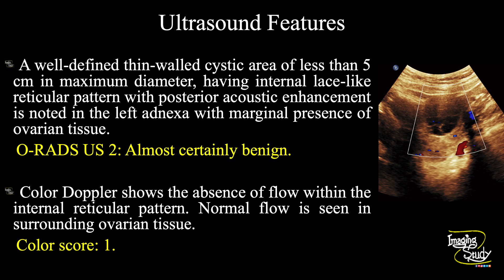As it is more than 3 cm and less than 10 cm, with the typical appearance of a hemorrhagic cyst, we give the ORAGE score as 2. And as there is no vascularity, we give it a color score of 1.